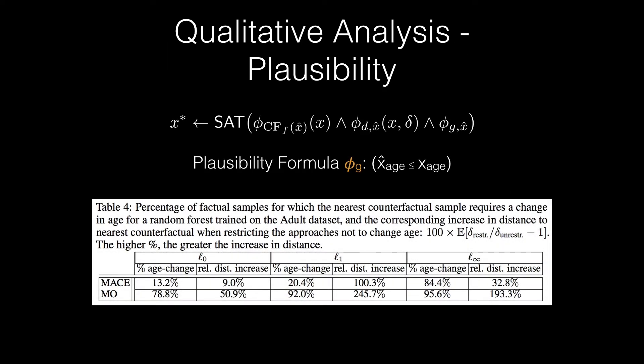Next, we qualitatively analyze the generated counterfactuals to ensure that they are meaningful. We observe that many of the counterfactuals require changes in features that are often protected by law, such as age, race, and gender. And this is not acceptable.